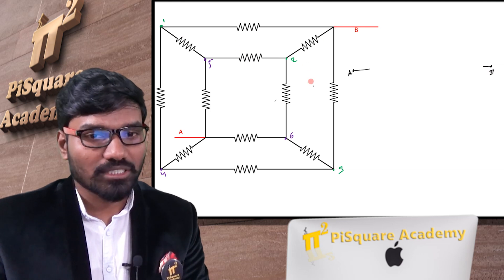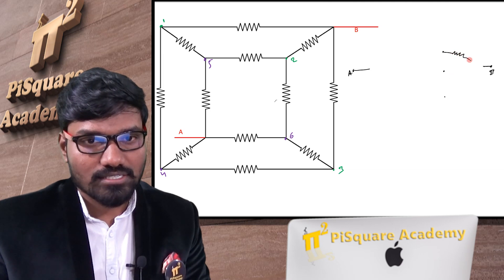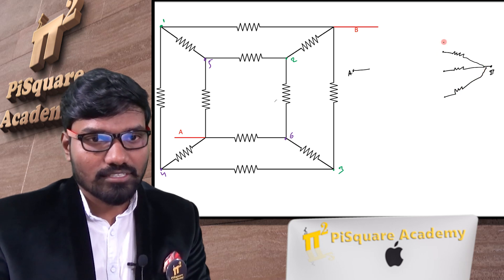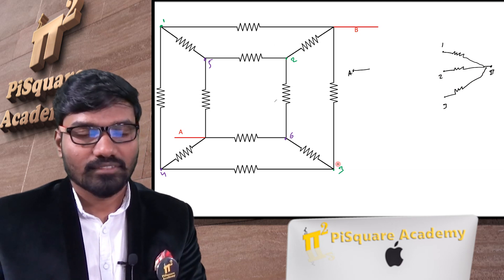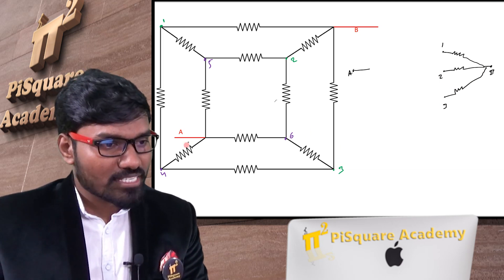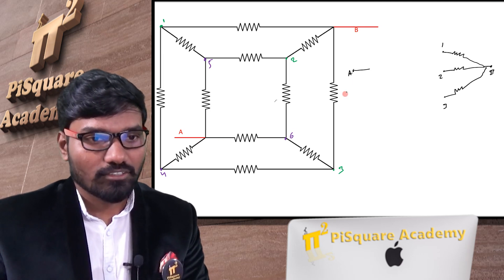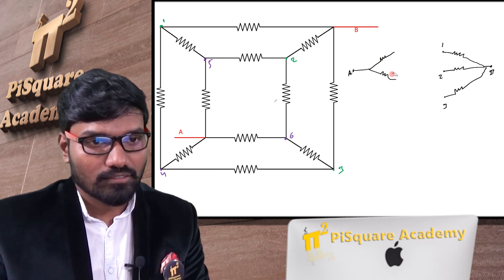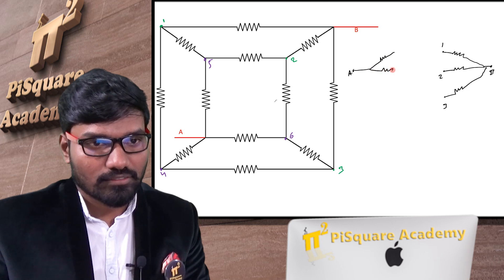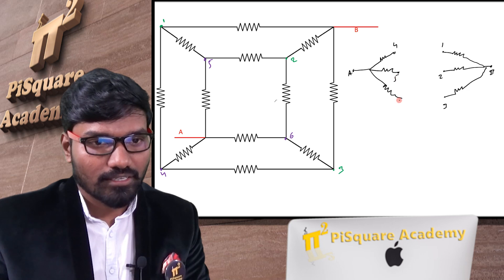From point B, points 1, 2, and 3 are connected — this is 1, 2, 3 — each with a resistance. This is point 1, this is point 2, this is point 3. From A, points 4, 5, and 6 are connected.